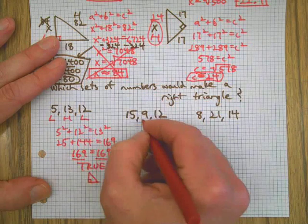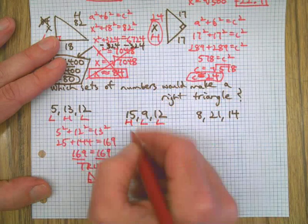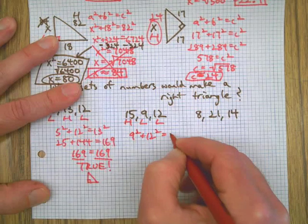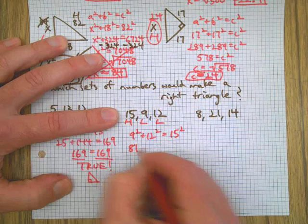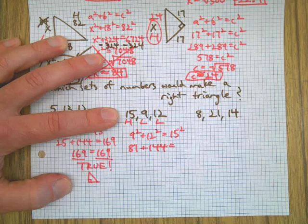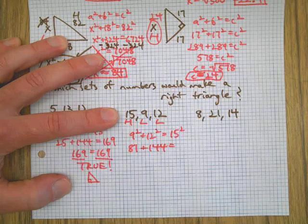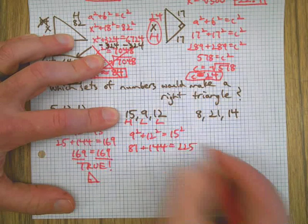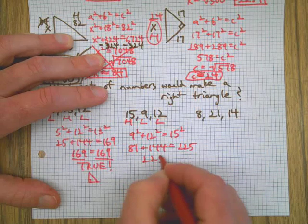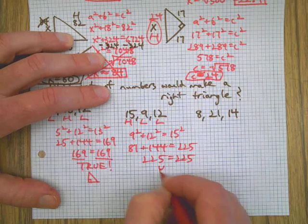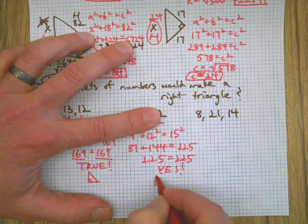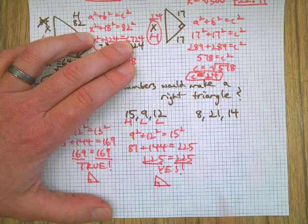This one, there's a leg, leg, hypotenuse, which is always the longest one. Will these three numbers make a right triangle? I think that's 225. Is it? Yes. Yes. This one is also a right triangle because these two things are equal.